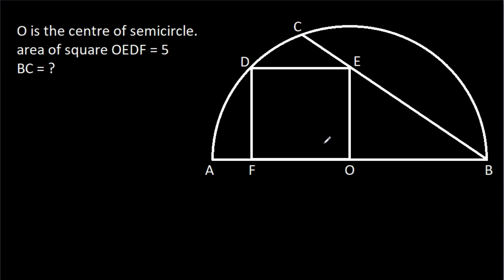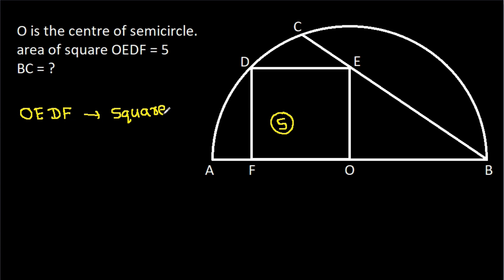In this video, we have been given that O is the center of a semicircle and the area of square OEDF is 5. We have to find BC. The area of OEDF equals side S squared, and since the area is 5, we get S squared equals 5.